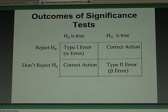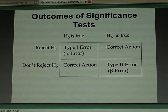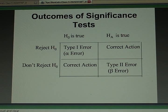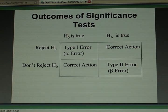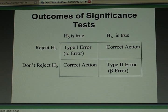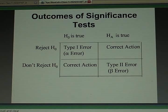Both errors are possible because you don't know whether the null hypothesis is in fact true or the null hypothesis is in fact not true. That's the reason you're doing this study. So you have to realize that you have the potential for making two types of errors.